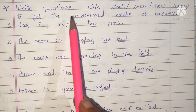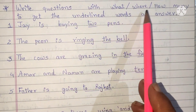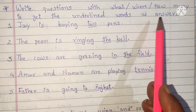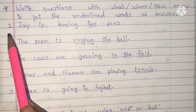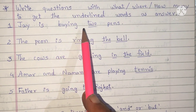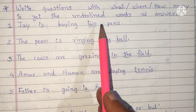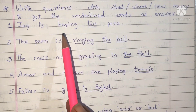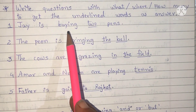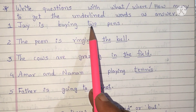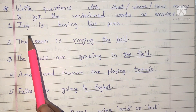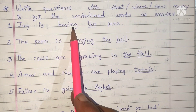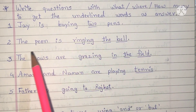Write questions with 'what', 'where', 'how many' to get the underlined words as the answer. Number one: Joy is buying two pens. Here 'two' is underlined. You have to make a question in such a way that you get the answer 'two'. How many pens is Joy buying? Put a question mark.